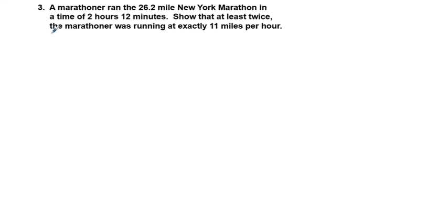We had this problem on our calculus quiz last week. A marathoner ran the 26.2 mile New York marathon in a time of 2 hours 12 minutes. Show that at least twice the marathoner was running at exactly 11 miles per hour.